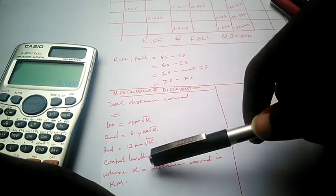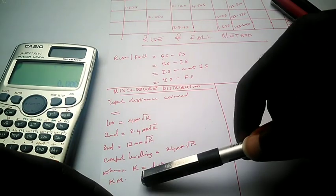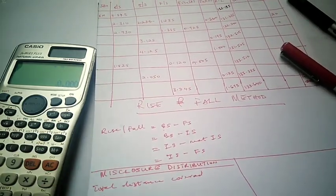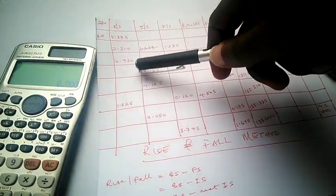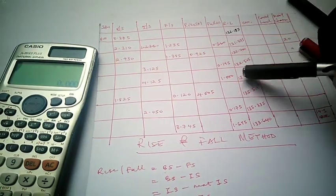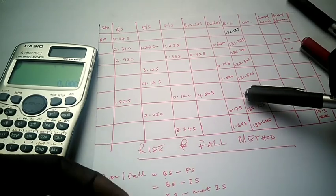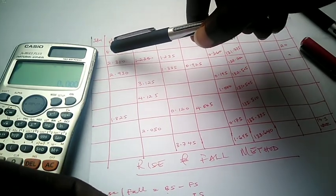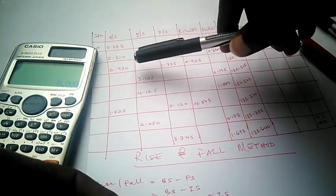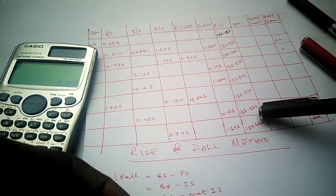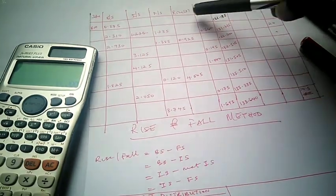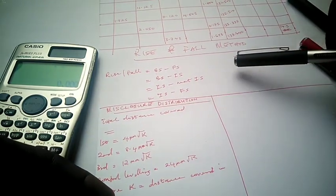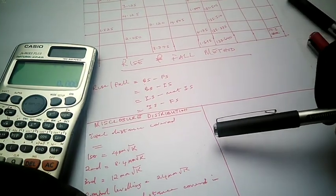For control leveling — school exercises, projects, or just to learn — we have 24 mm√k, where k is equal to the total distance covered in kilometers. The solutions to the backsight, intermediate sight, foresight, rise and fall, and reduced level for this problem are already on the channel — check the description for the link. Today we are going to determine the allowable misclosure and distribute the misclosure along the stations.